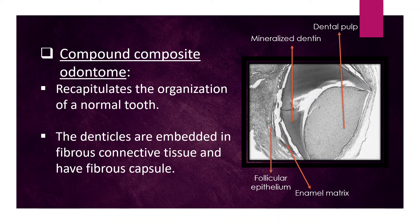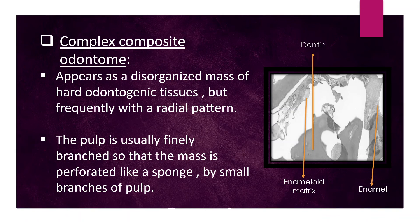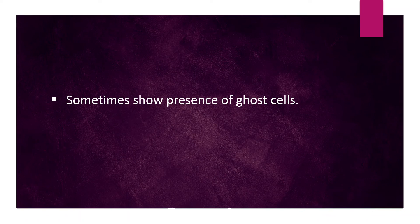Compound composite odontoma recapitulates the organization of a normal tooth. The denticles are embedded in a fibrous connective tissue and have a fibrous capsule. Complex composite odontoma appears as a disorganized mass of hard odontogenic tissues, frequently with a radial pattern. The pulp is usually finely branched so that the mass is perforated like a sponge by small branches of pulp. Sometimes ghost cells are present.